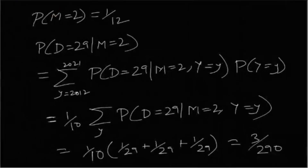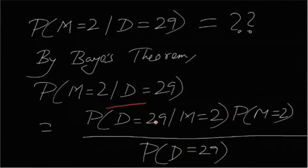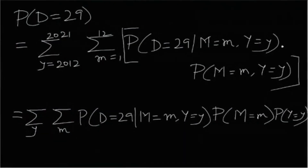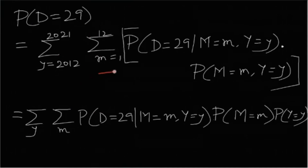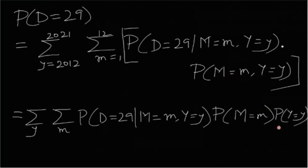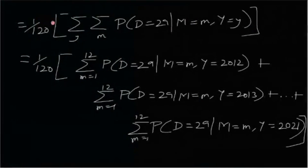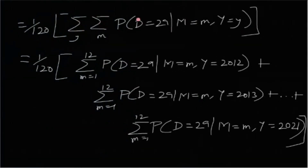We have now figured out P(D=29|M=2) = 3/290 and P(M=2) = 1/12. Now for the last piece: P(D = 29). Again, using the law of total probability, we condition on both M and Y: P(D=29) = sum over Y, sum over M of P(D=29 | M=m, Y=y) × P(M=m, Y=y). Since M and Y are independent, P(M=m, Y=y) = P(M=m) × P(Y=y) = (1/12)(1/10) = 1/120, which factors out.